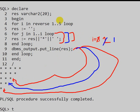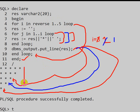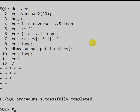The outer loop has now been iterated 5 times. End of the outer loop and end of the program. The final pattern is printed. This is how we can write a PL/SQL program to print this descending star pattern.